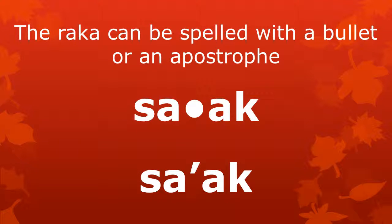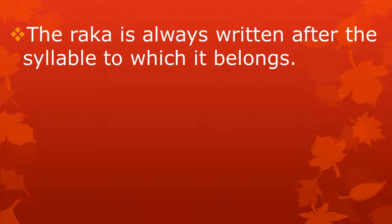The RAKA can be spelled with a bullet or with the apostrophe, as you can see here in the word SAAK. Both spellings are correct. The apostrophe is easy to use in handwriting and when typing on your mobile phone or computer. The RAKA is always written directly after the syllable to which it belongs. In a later video, it will become clear why this rule is important.